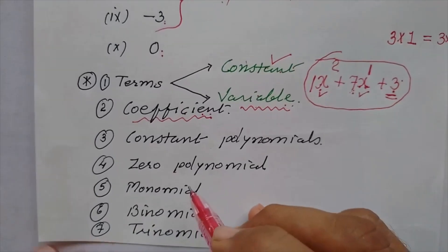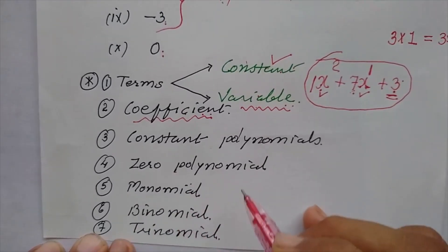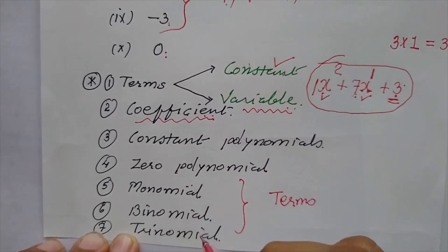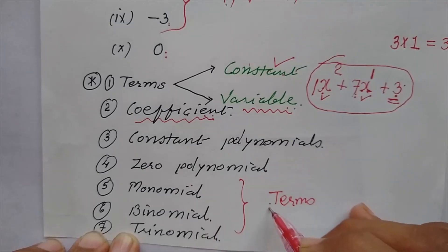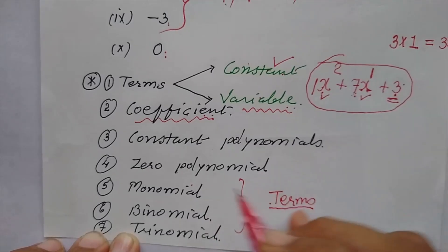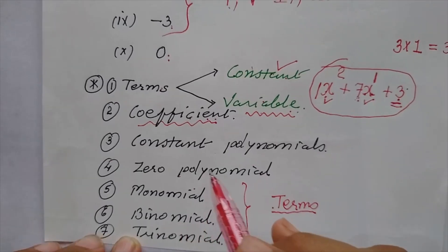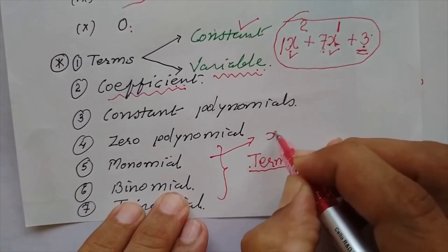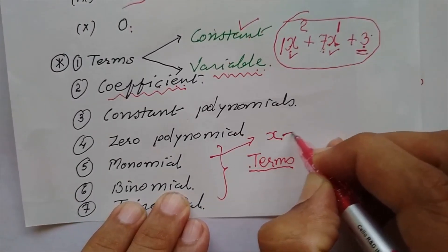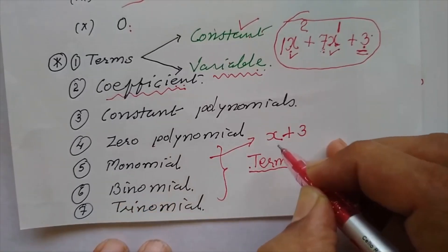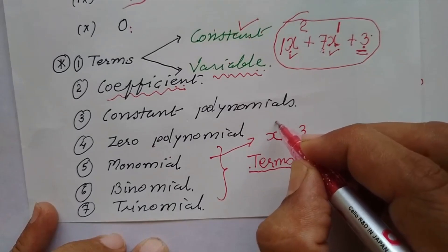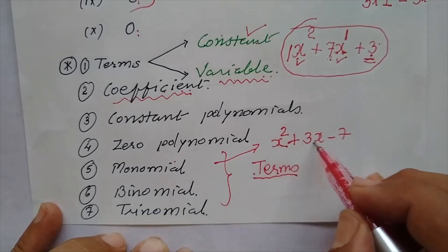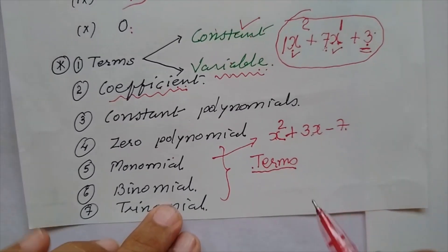Now children, we have 3 words: monomial, binomial, and trinomial. This depends on terms — how many terms are there. According to that, names are given. If one term is there, that is monomial. For example, if x is there, this is monomial. x plus 3, this is known as binomial — two terms are there. And x square plus 3x minus 7, this is known as trinomial — three terms are there.